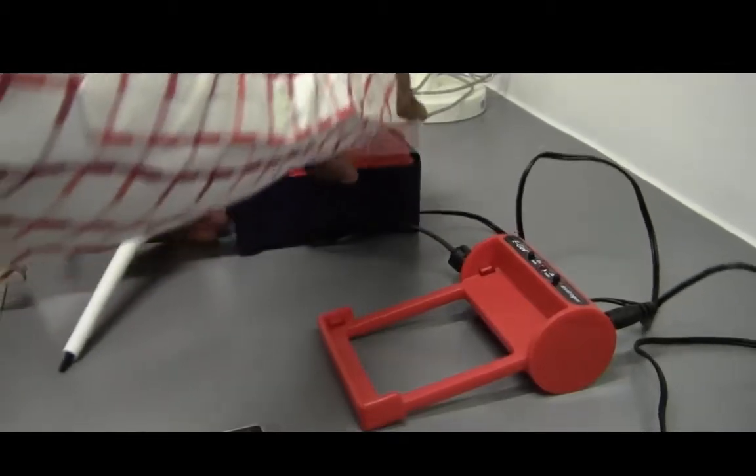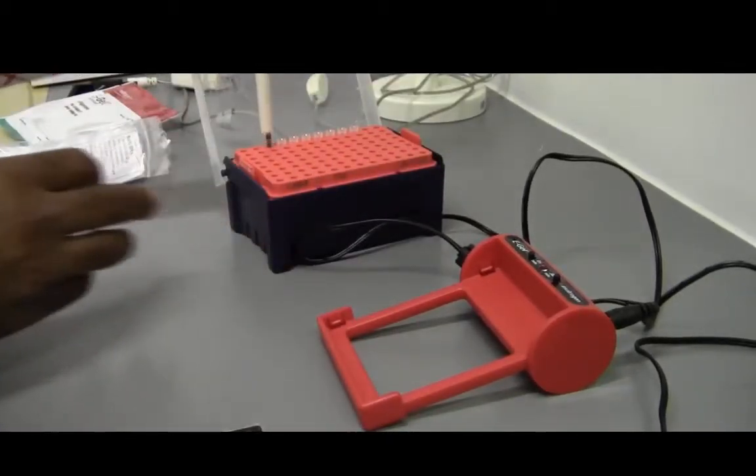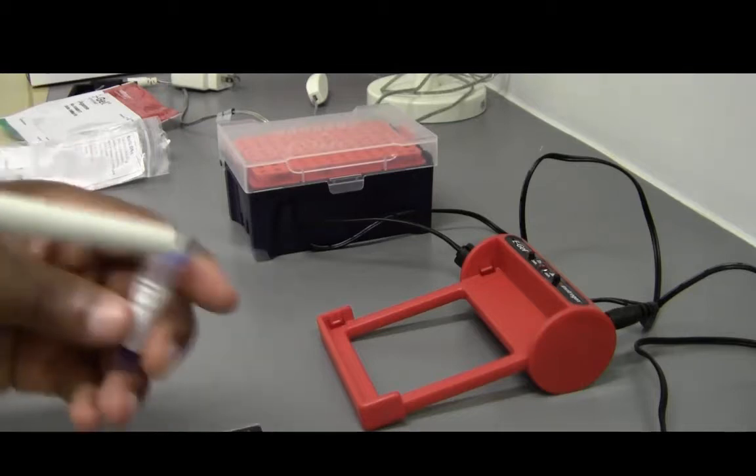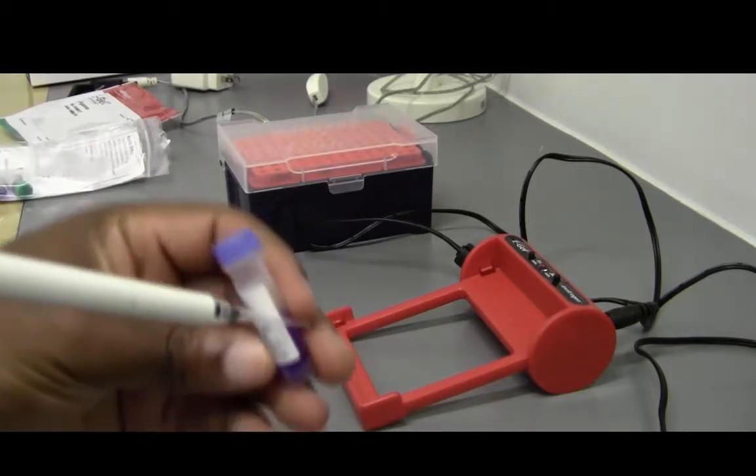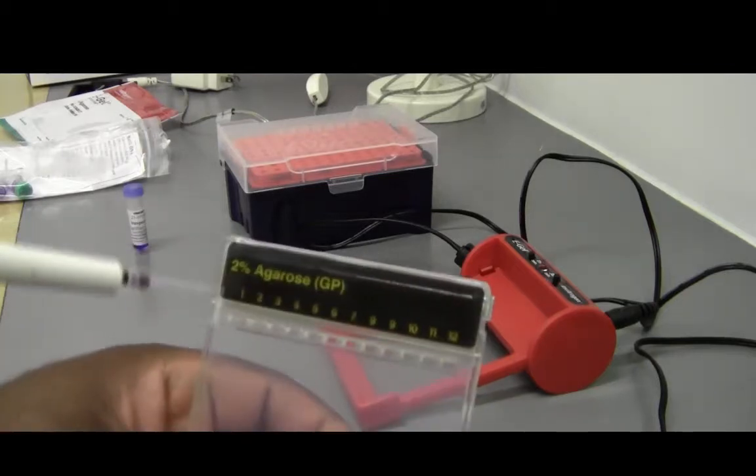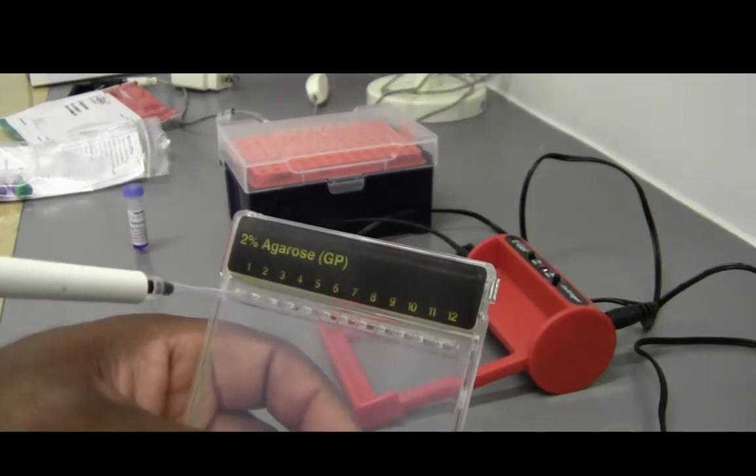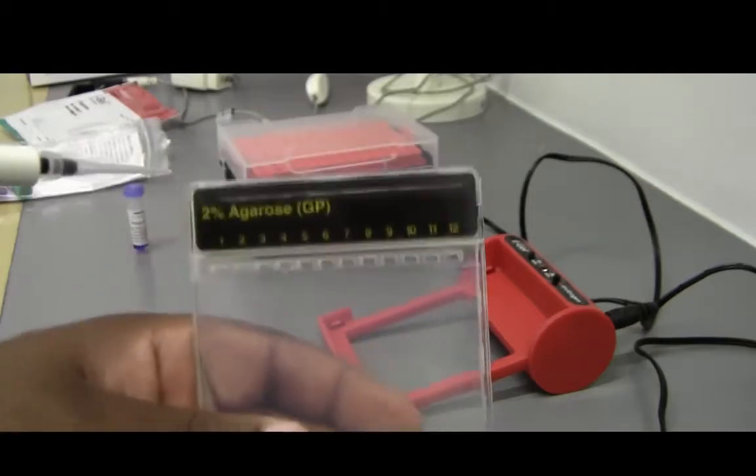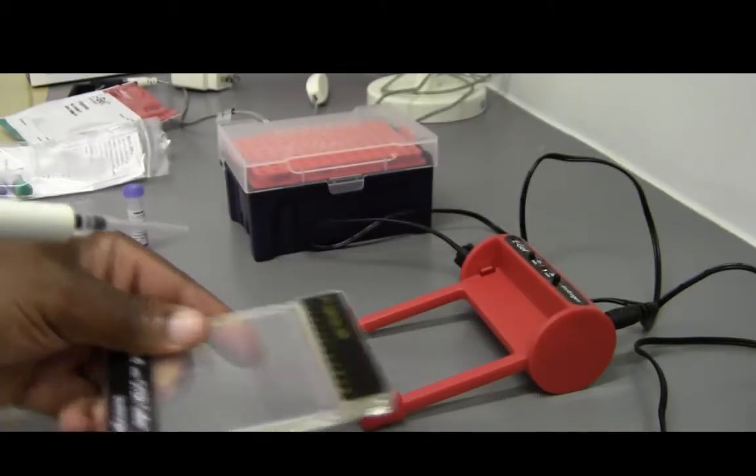So I'll get my pipette, my tip. Now I'll pipette my DNA sample and then I'll pipette into the wells. Of course I'm showing it face up this way but it should be flat on the surface.